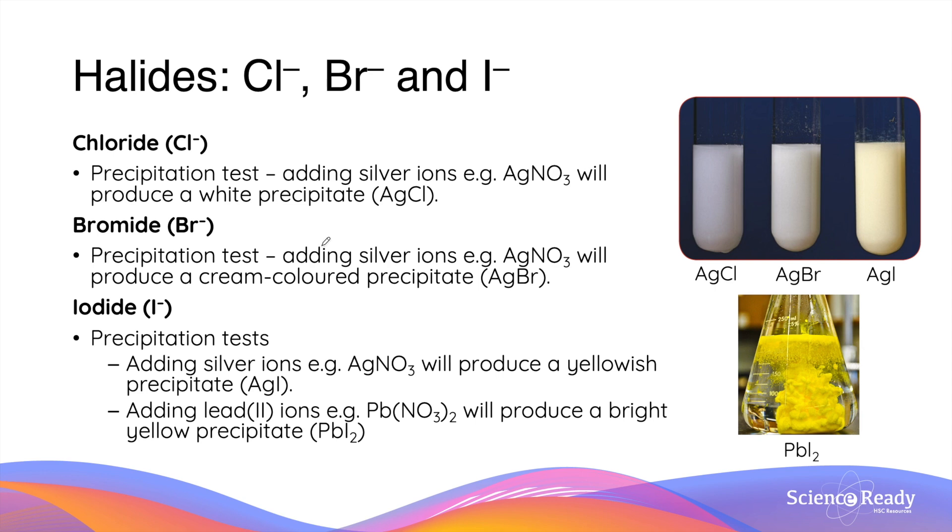These three ions both produce precipitates with silver ions and lead ions. However, it is recommended that we use silver ions over lead ions as the latter is toxic. Although these three anions produce precipitates with silver ions, as you can see here, they produce precipitates with different colors.